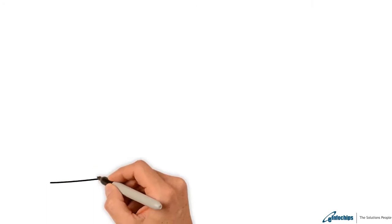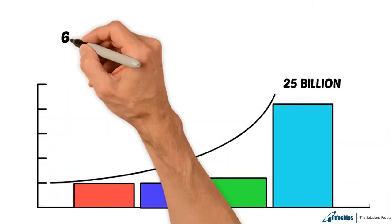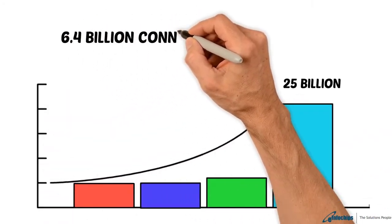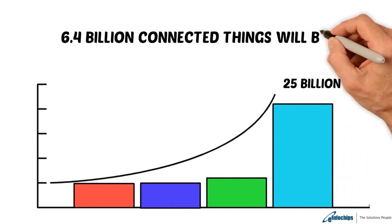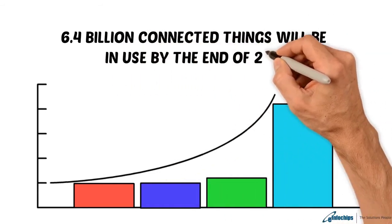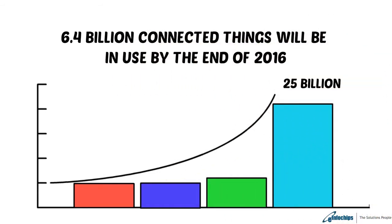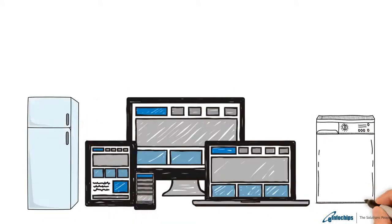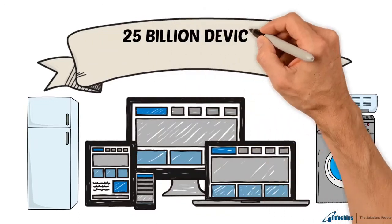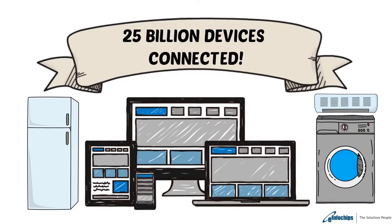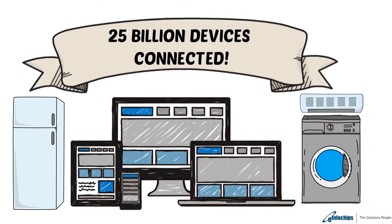Market research estimates that 6.4 billion connected things will be in use by the end of 2016, with close to 5.5 million new devices getting connected every single day. By 2020, we might have close to 25 billion devices providing data and control in all aspects of our lives.